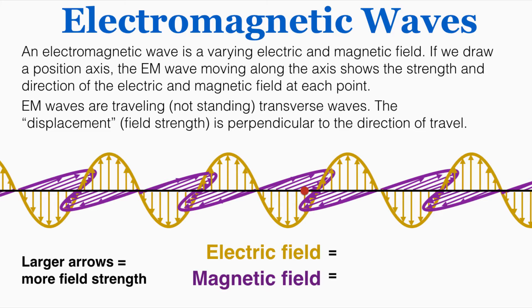You can see based on the properties of this wave that it's a traveling wave not a standing wave. Every point experiences the full oscillation of the wave and the displacement, which in this case means the change in the field strength, is perpendicular to the direction of motion. For both the electric and magnetic field those oscillations point perpendicularly to the velocity of the wave. So we say that all electromagnetic waves are traveling transverse waves.